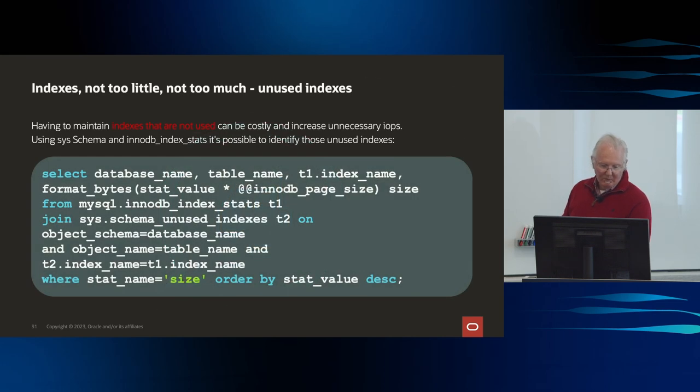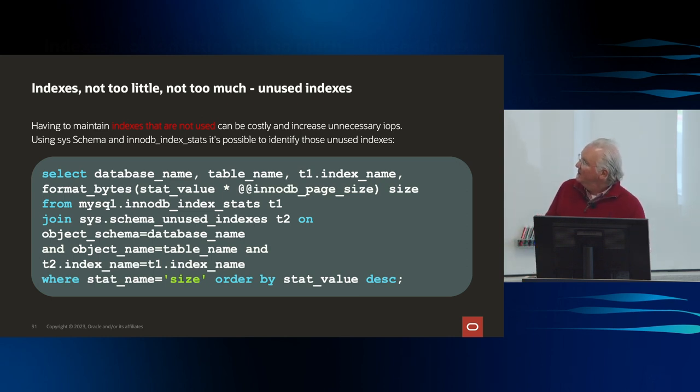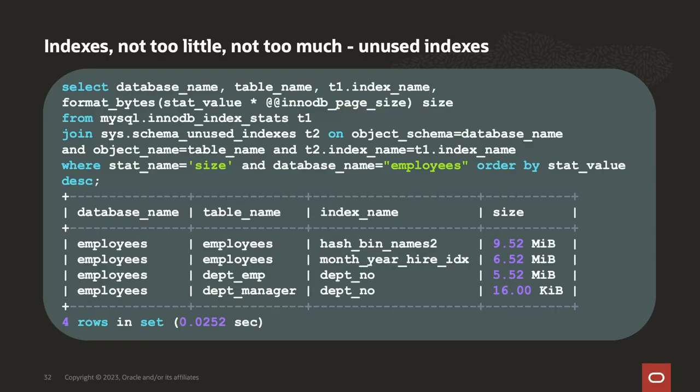Tip number four: indexes — not too little, not too much. You don't want to over-index because an index is something you have to write and maintain, but you definitely need to have them. We can run this query to determine what indexes haven't been used. If they've never been used, just drop them — if no query has ever used an index, you don't need it.